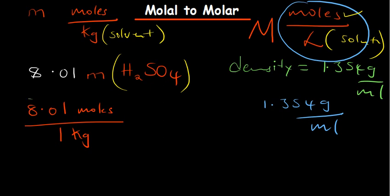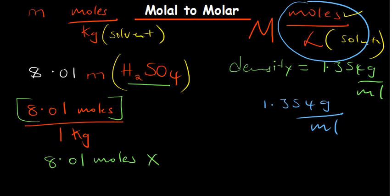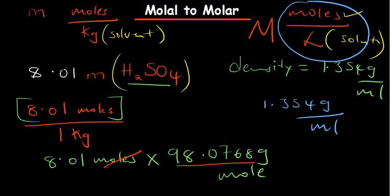Since we know the moles of the solute — sulfuric acid — we can use its molar mass to find the mass. So, 8.01 moles of sulfuric acid multiplied by its molar mass of 98.0768 grams per mole gives us the mass of the solute. The moles cancel out, and the mass of the solute is 785.6 grams.